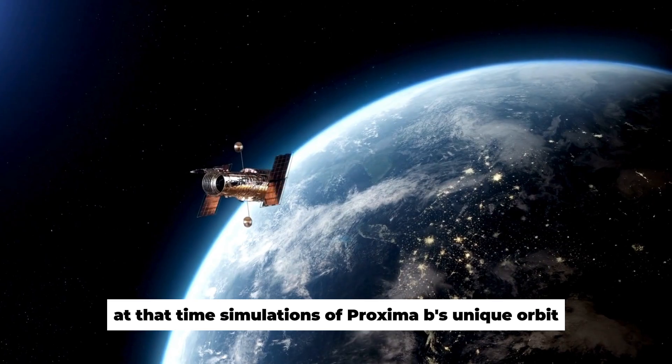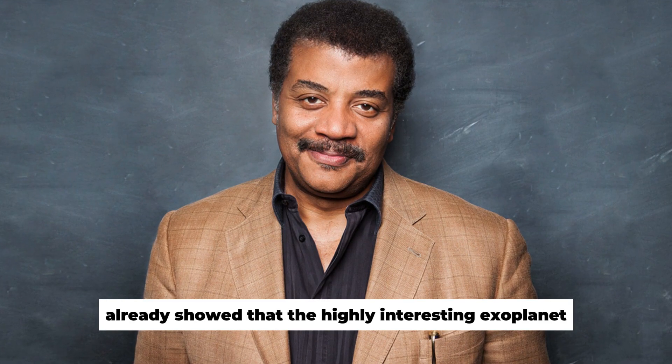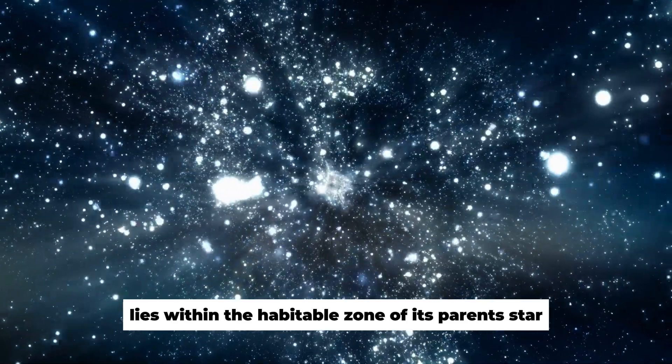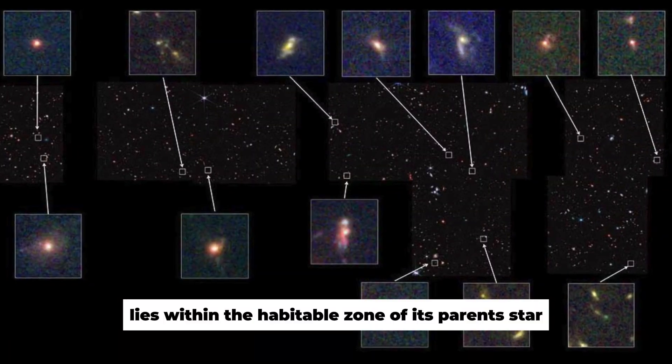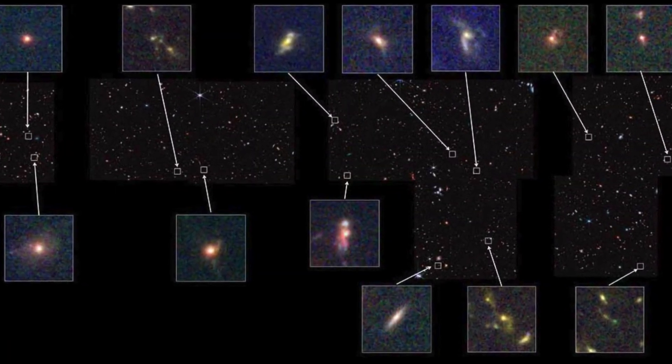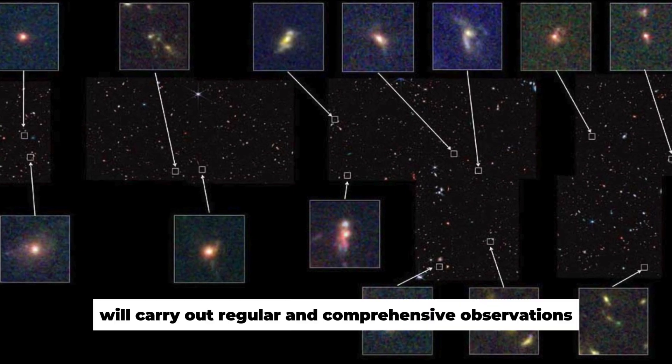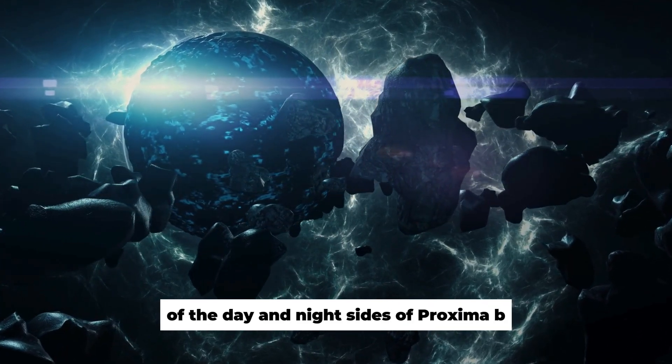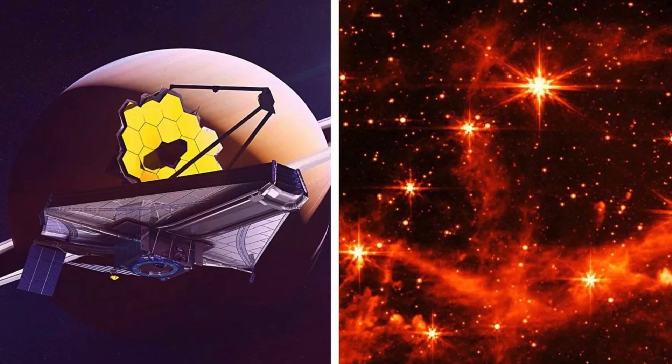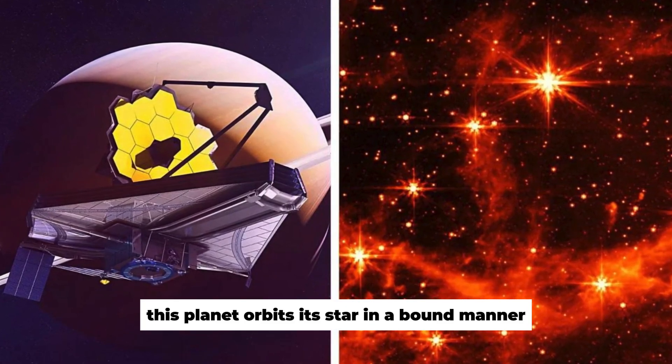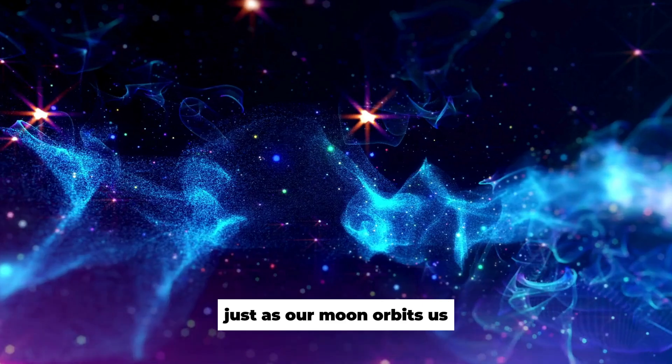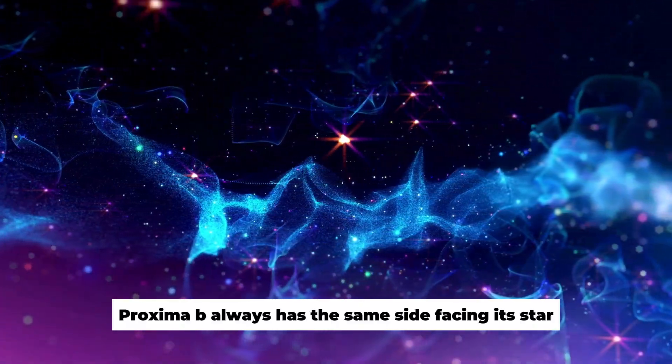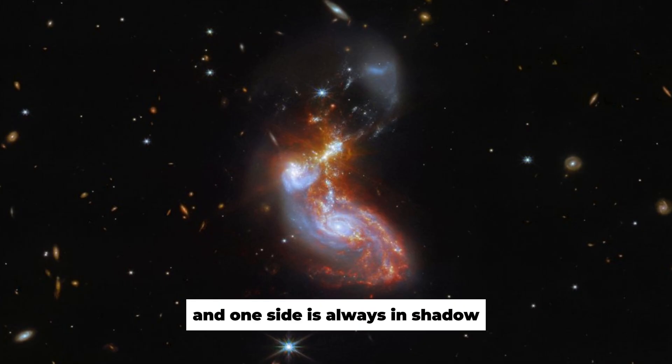At that time, simulations of Proxima b's unique orbit already showed that the highly interesting exoplanet lies within the habitable zone of its parent star, Proxima Centauri. The JWST will carry out regular and comprehensive observations of the day and night sides of Proxima b. This planet orbits its star in a bound manner, just as our Moon orbits us. Proxima b always has the same side facing its star, and one side is always in shadow.